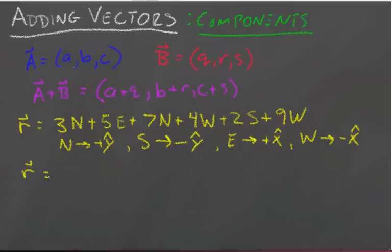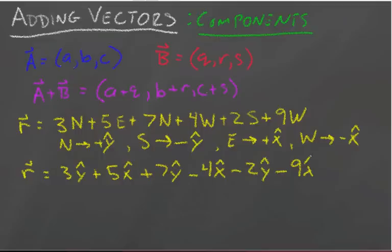In other words, R is going to be equal to three y-hat, plus five x-hat, plus seven y-hat, minus four x-hat because west is in the negative x direction, minus two y-hat since south is in the minus y direction, minus nine x-hat.